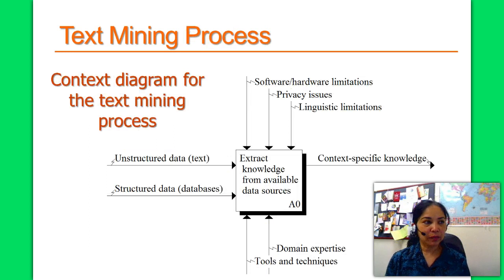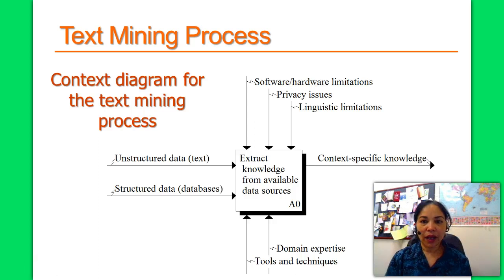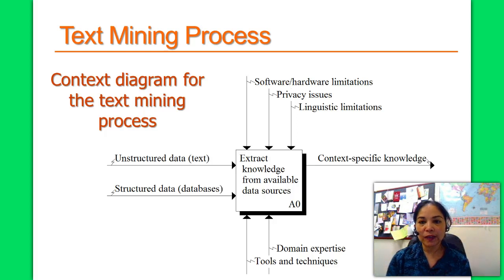In the text mining process, the input is text and database data, and the output is context-specific knowledge used for decision making. Controls, also called constraints, include software and hardware limitations and privacy issues, as well as difficulties related to the processing of texts. Mechanisms include techniques and software tools. The primary purpose of text mining is to process unstructured or textual data, along with structured data if relevant and available, to extract meaningful and actionable patterns for better decision making.